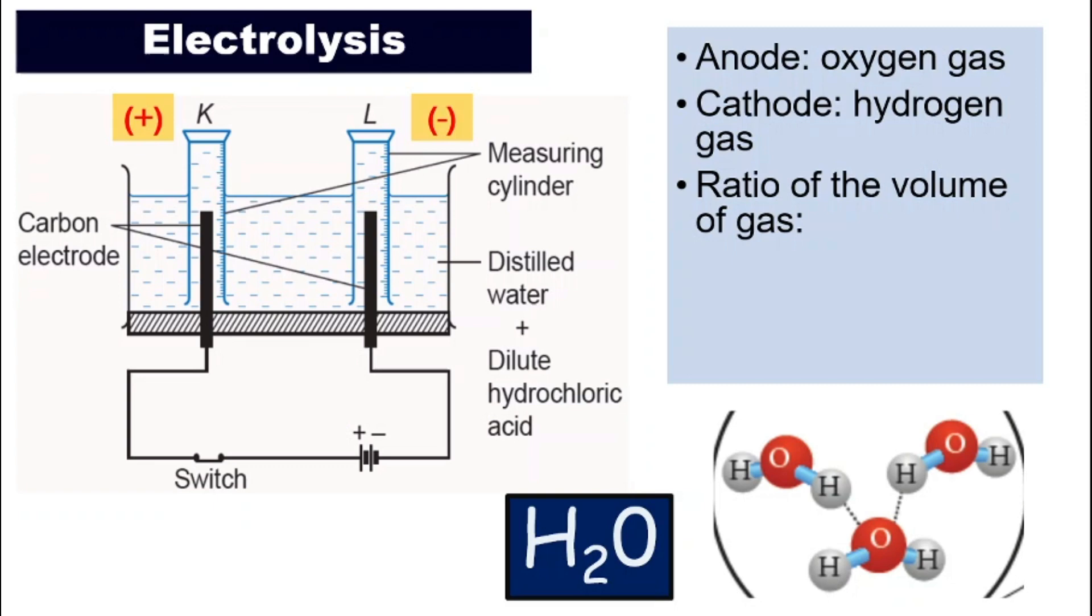Next, we'll look at the ratio of the volume of gas. And it is very important that we note what is the order that the question wants. For example, if the question says, what is the ratio of anode to cathode? If they mention anode first, or if they mention K first, we need to know that K positive oxygen. This is oxygen, so the answer will be 1. And then for H, hydrogen, the answer will be 2. Why? Because we have 2 hydrogen and 1 oxygen. So the answer is 1 to 2. If it goes the other way, cathode to anode, L to K, then the answer will be 2 to 1. The order is very important.